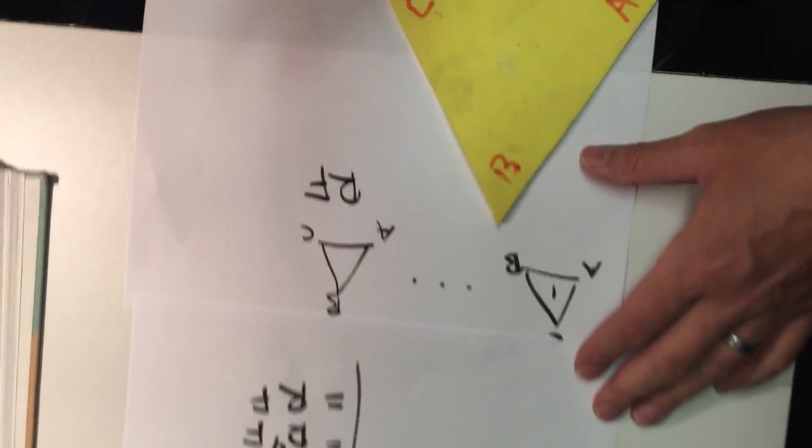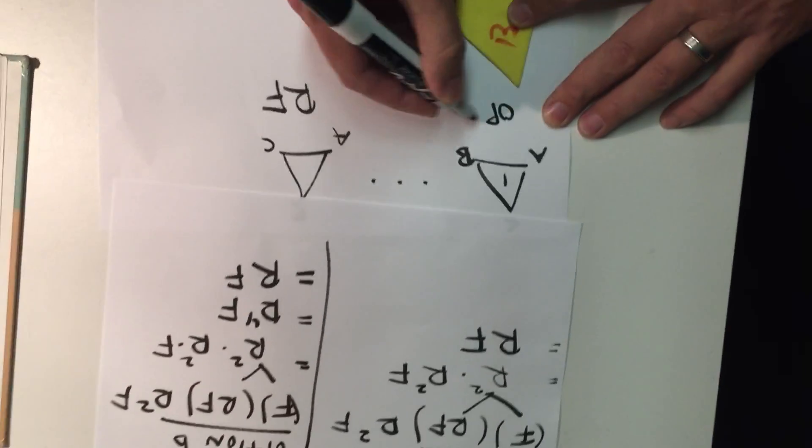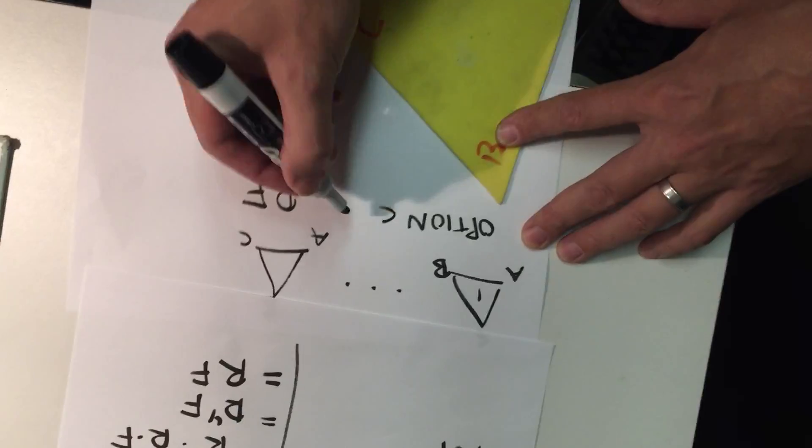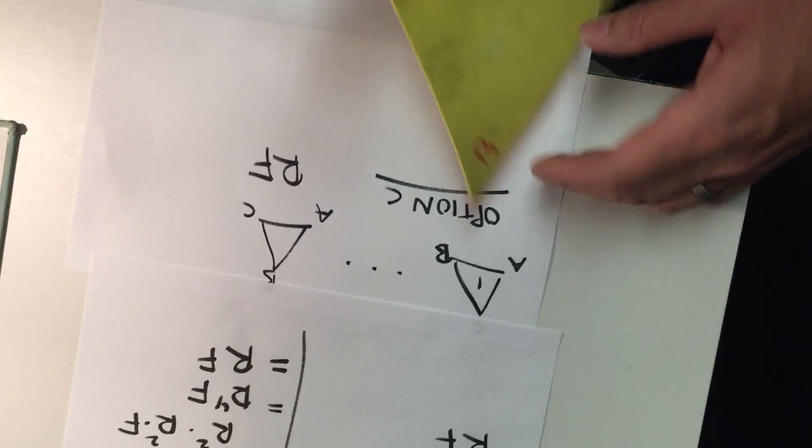We have option A, option B, and then flipping and rotating the triangle is our option C. So that's that. So that's it.